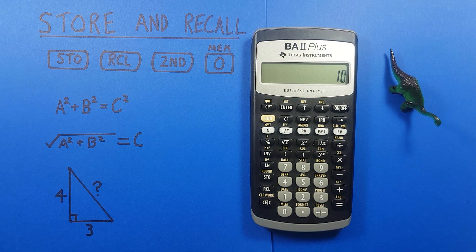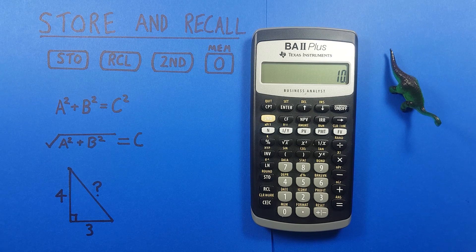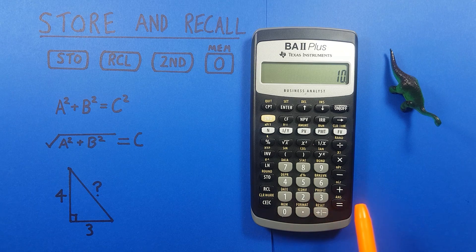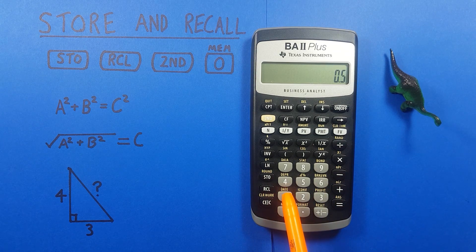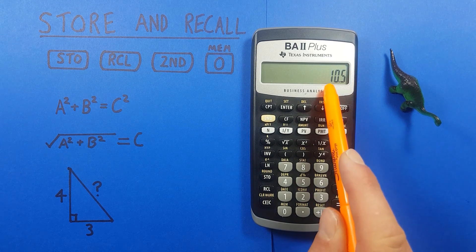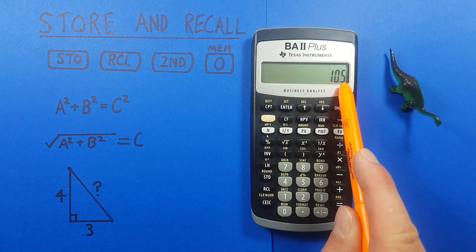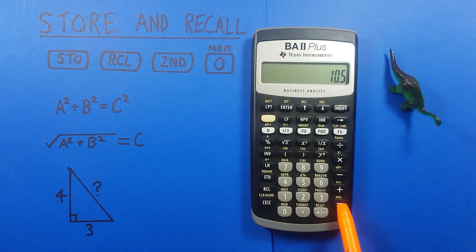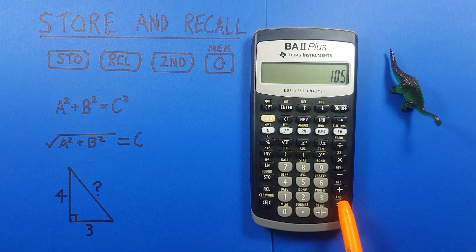We can also add and subtract numbers from memory slots, so let's add that 0.5 from memory slot 1. We do that by pressing plus, recall 1, there's that 0.5, equals, and you can see we have 10.5 now. And we can store that into memory slot 2.